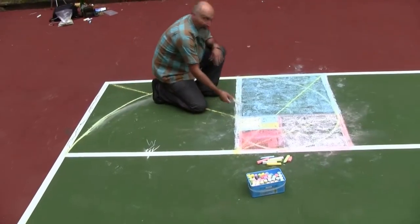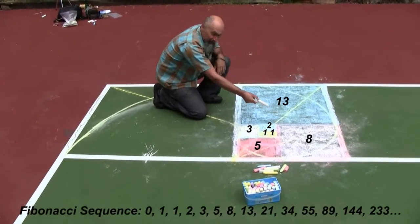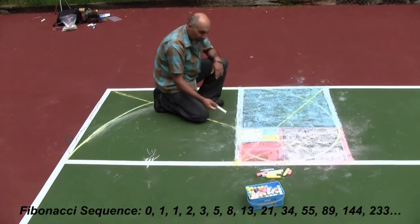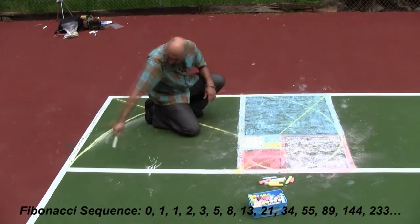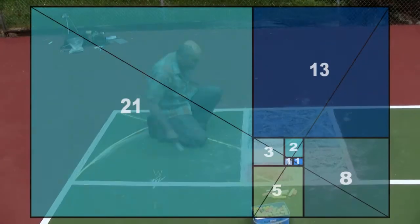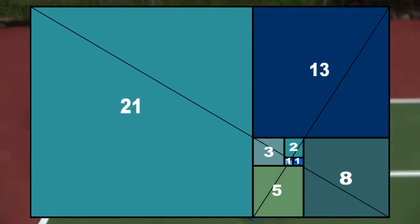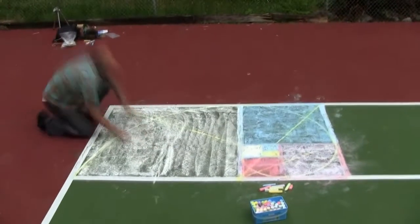So what we have right now, this is a thirteen box, that's an eight box, so thirteen plus eight is twenty-one, which is exactly what we're going to have here, is a twenty-one unit by twenty-one unit box. So this guy now is a twenty-one box.